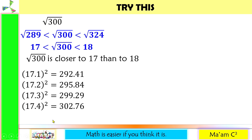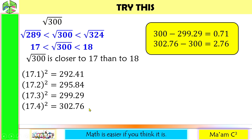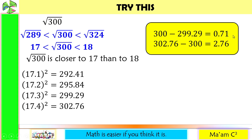Now I'm going to determine the numbers closer to 300. Since one of the squared values is already greater than 300, I don't need to get 17.5 squared. Since 300 is closer to that number, the square root of 300 is closer to 17.3.